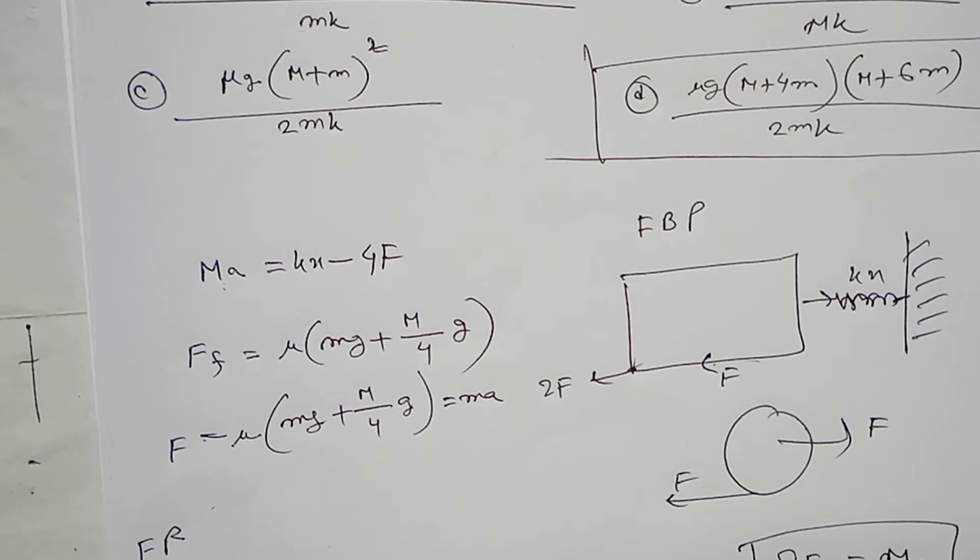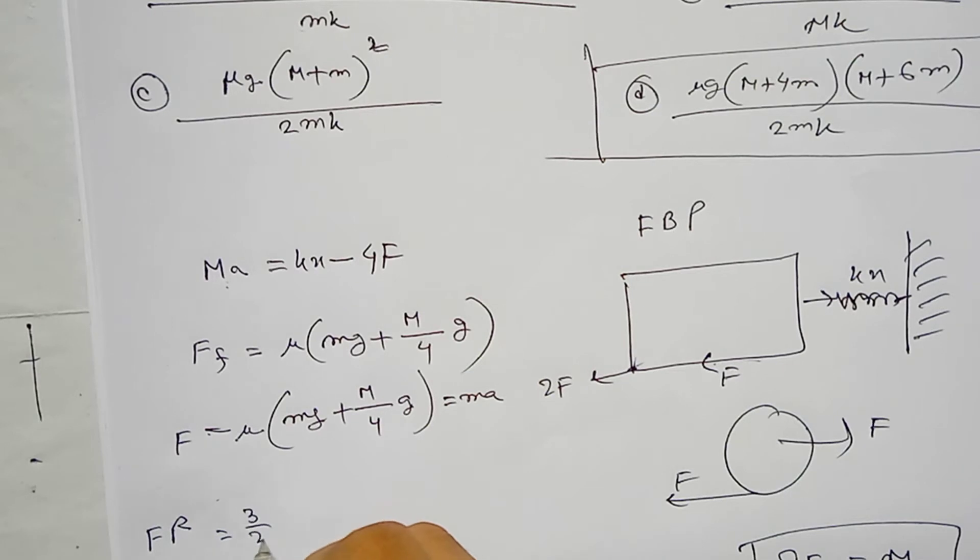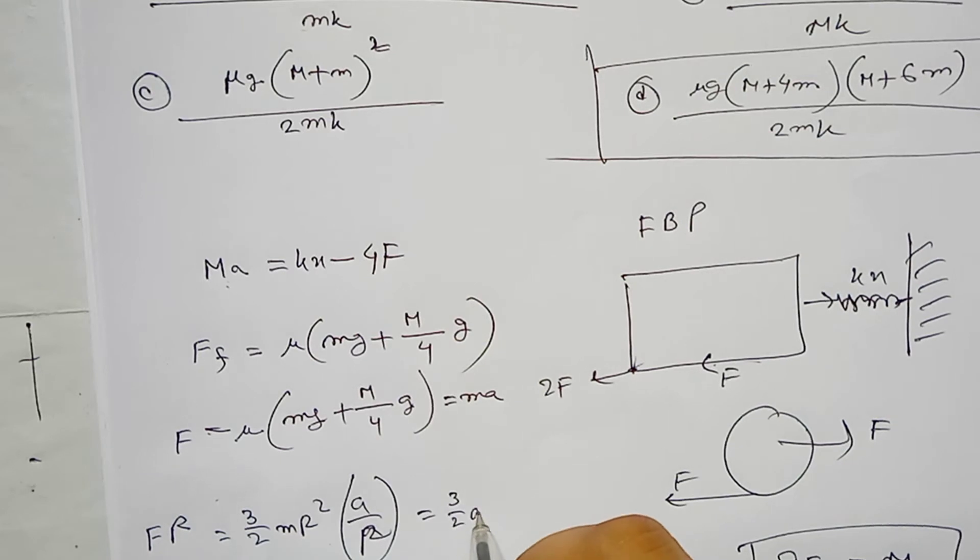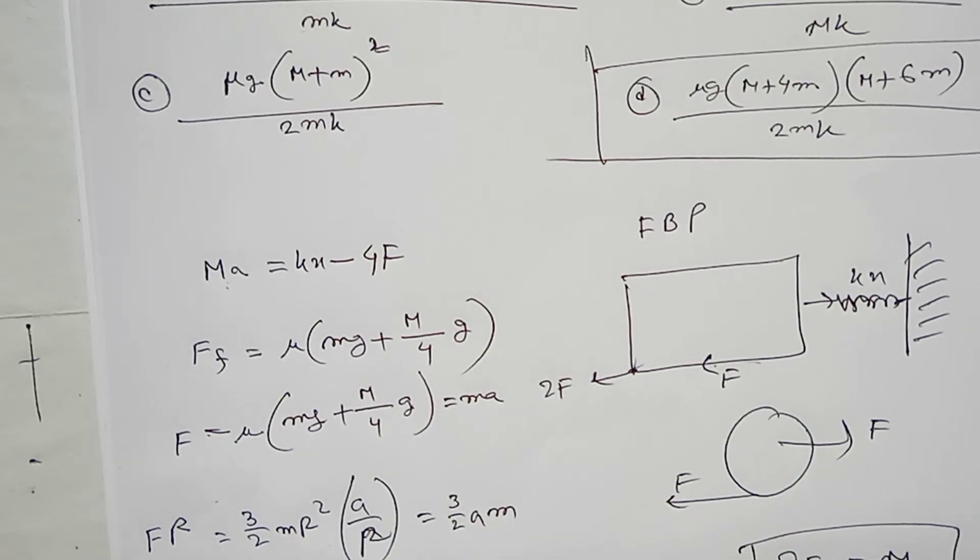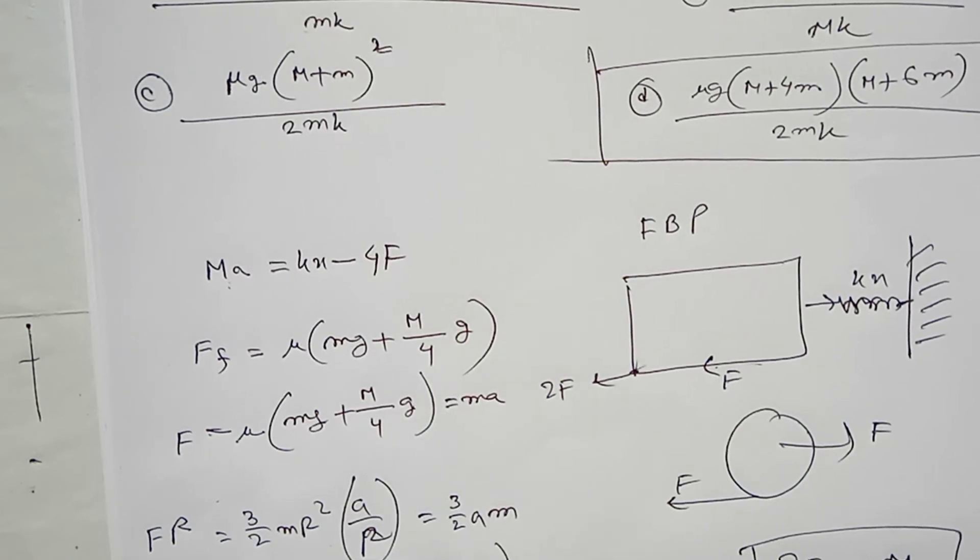The force if, the torque equation gives 3 by 2 m r squared times a divided by r equals 3 by 2 m a. So a equals 2 mu divided by m times (mg plus m divided by 4 times g).